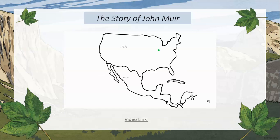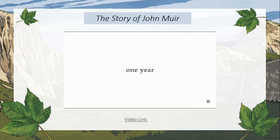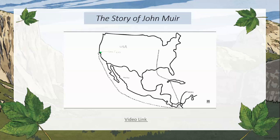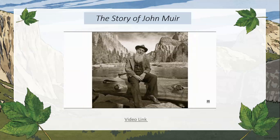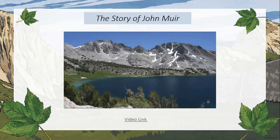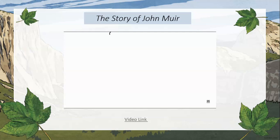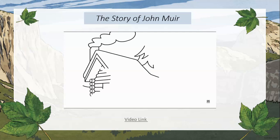His adventure started when he decided to walk a thousand miles from Indianapolis to the Gulf of Mexico. Then he sailed to Cuba and then to Panama. After that, he sailed up the west coast of the United States, and in March of 1868 — only one year after the eye injury — he landed in San Francisco. John Muir quickly decided that California would be his home, captured by his travels in Yosemite and the Sierra Nevada. After his first time in this new landscape, he built a pine cabin in Yosemite.